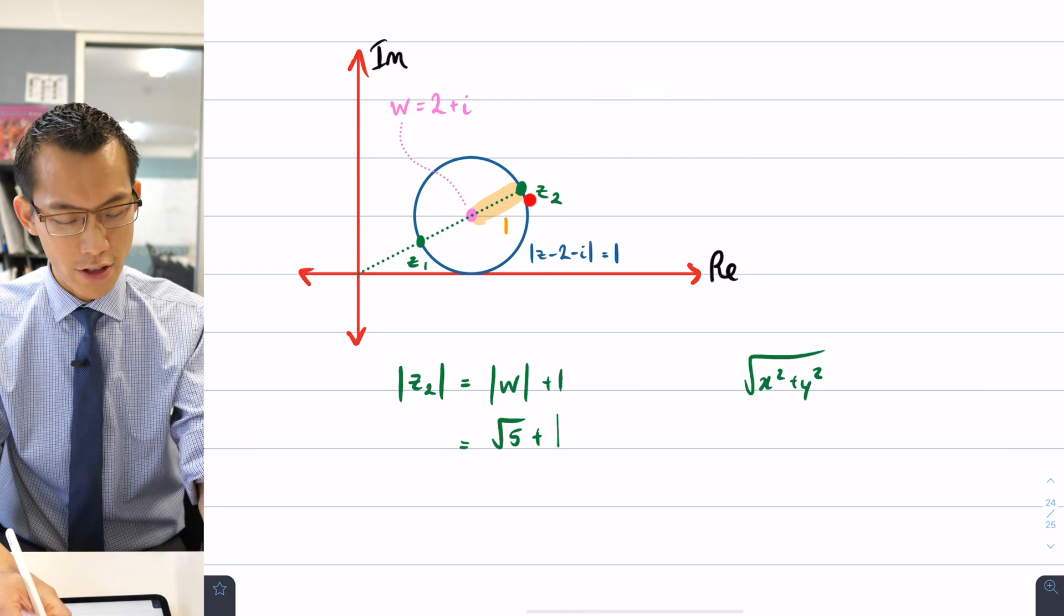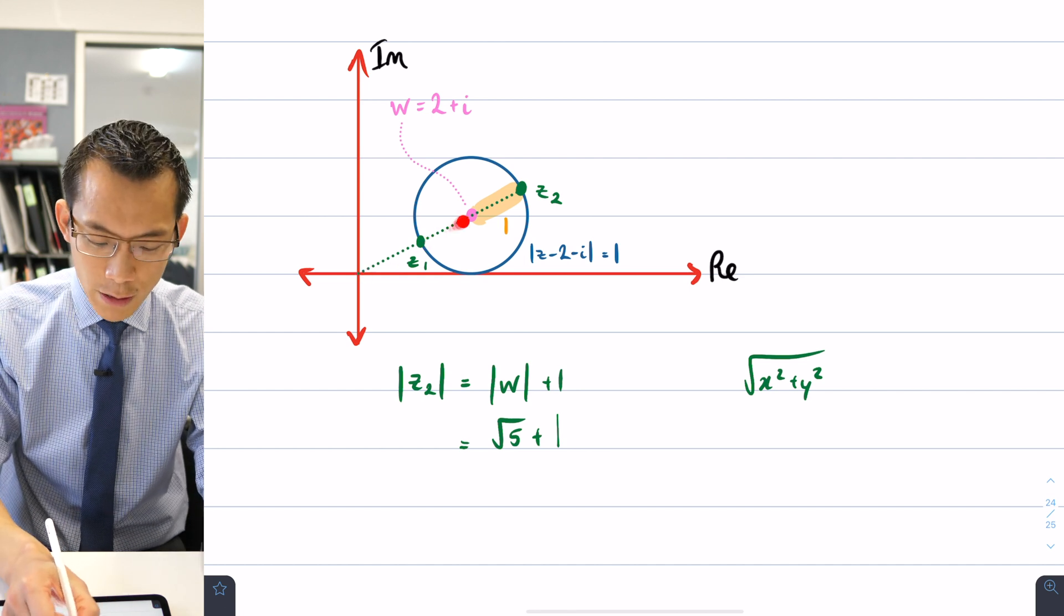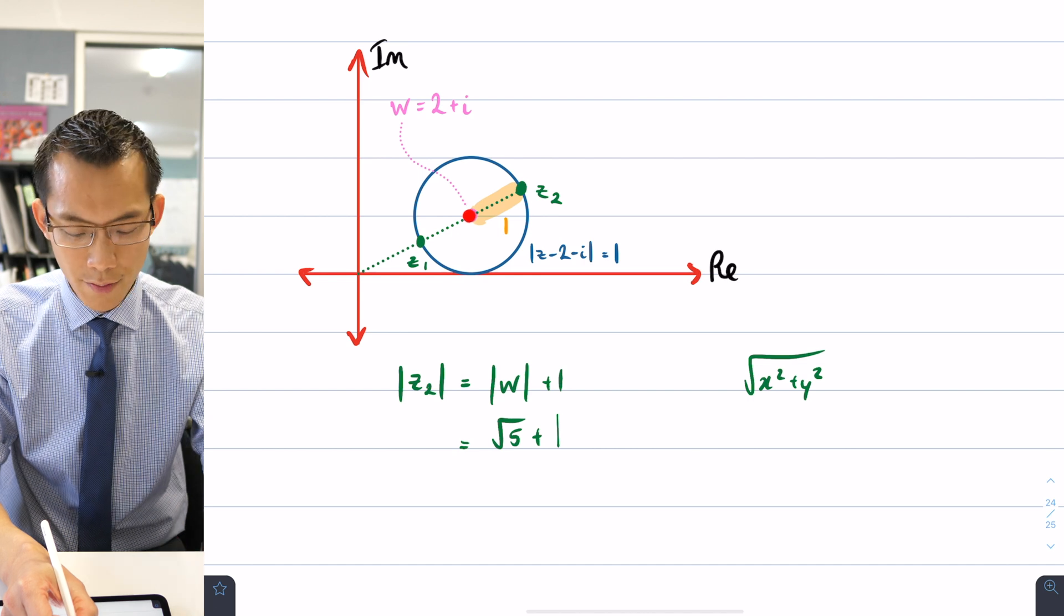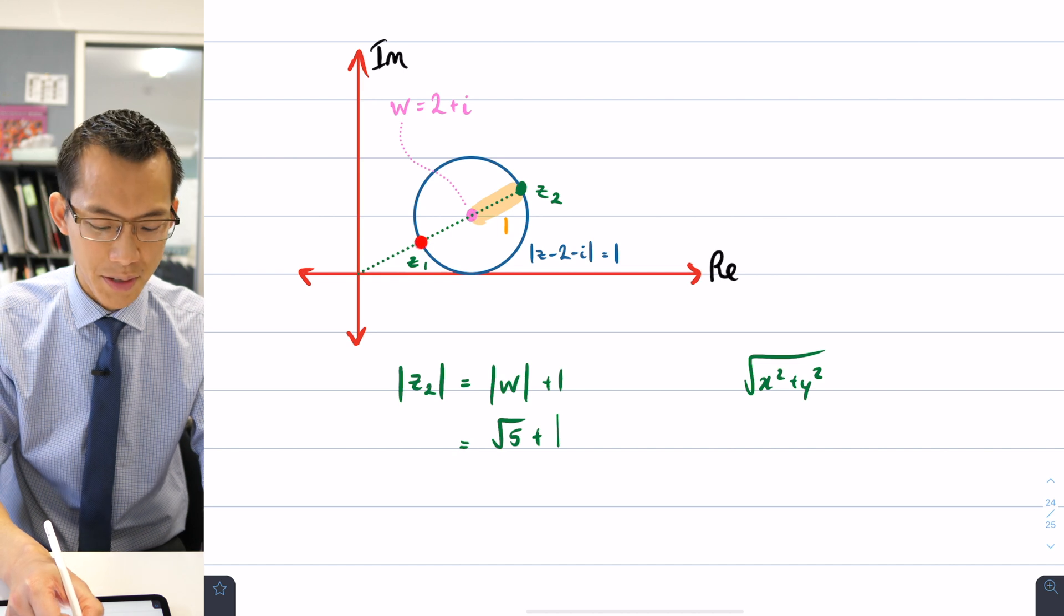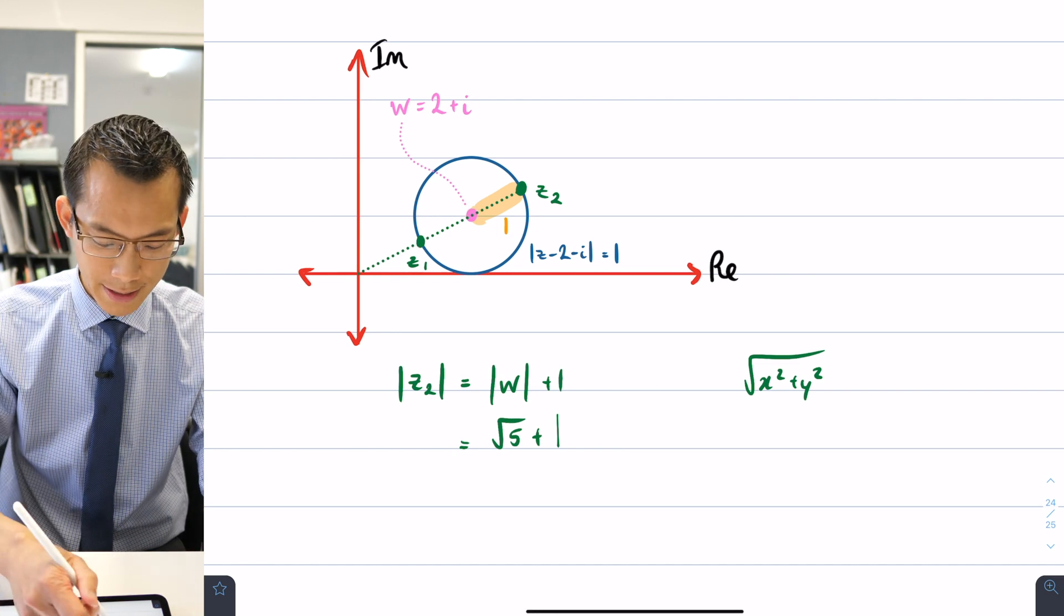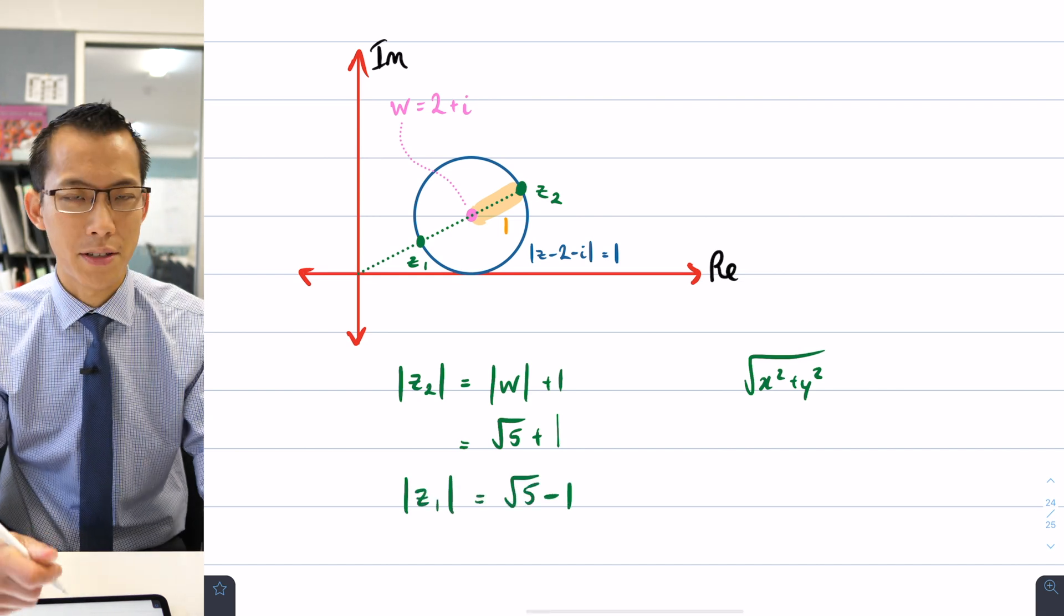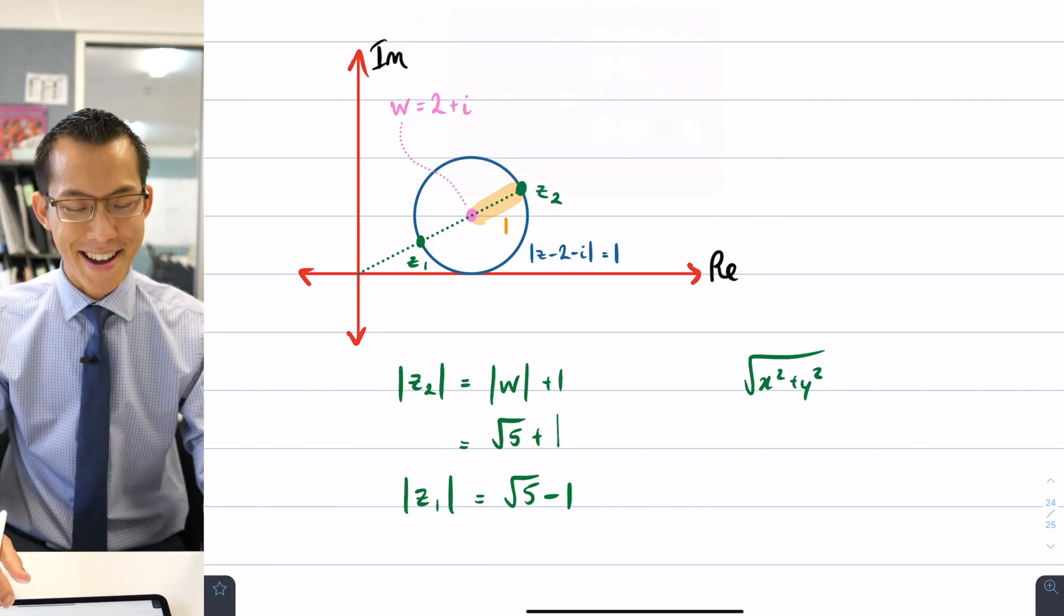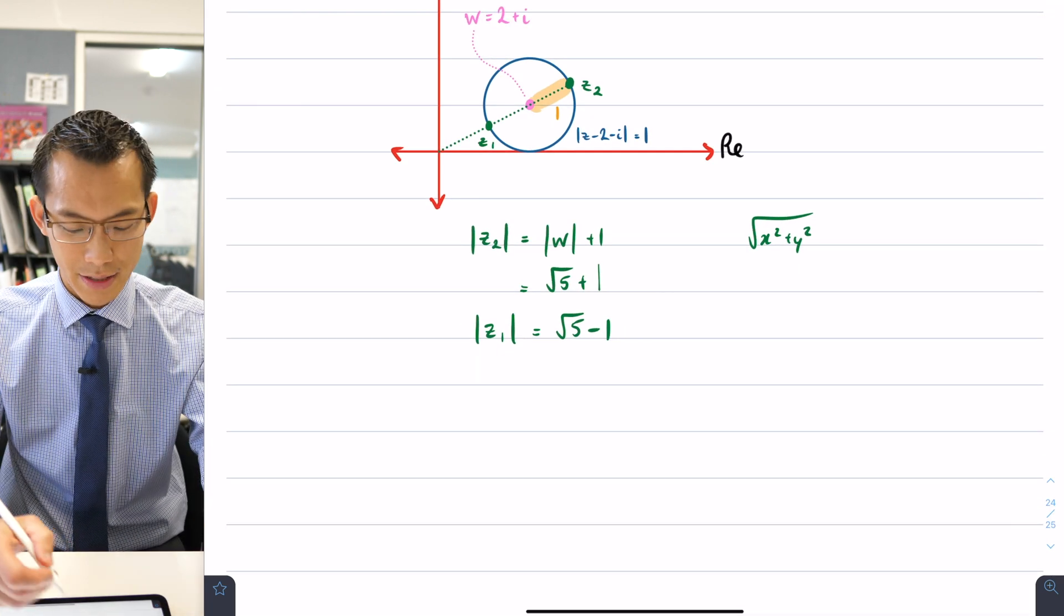To work out the minimum value I just have to go in the opposite direction. It is still related to this modulus of w which we already know is root five but instead of going past it one unit the radius I have to go backwards so it's not the square root of five plus one it's going to be, let's write it down, the modulus of z1 will be the square root of five minus one because it's in the opposite direction. So now I have used my diagram, I've interpreted what's going on and I can say a maximum value and a minimum value for the modulus of z.